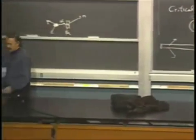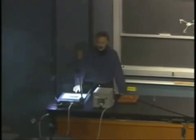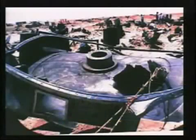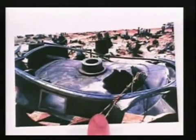Saddam Hussein built calutrons. As we can tell, he did no major enrichment of uranium using these calutrons, but here is a calutron, one of Saddam Hussein's calutrons, that was destroyed by the United Nations when it was found in 1990.